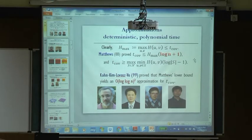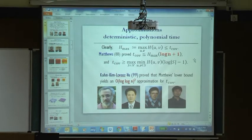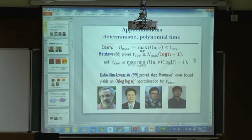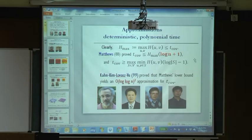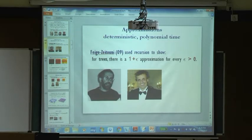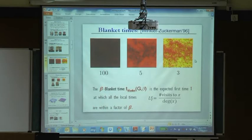The Aldous–Fill problem of estimating up to a constant was still open. This is a sophisticated proof — not something one can guess on the spot. For trees, an approximation was found in 2009 by recursion.